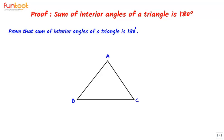You might have learned that the sum of interior angles of a triangle is 180 degrees. Here, let's prove that. We have a triangle ABC, and we have to prove that angle BAC plus angle ABC plus angle ACB is equal to 180 degrees.